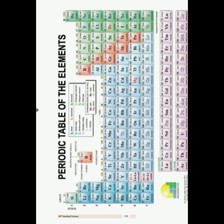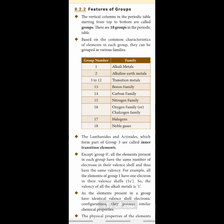Now I am going to explain about groups. Horizontal rows are called periods — there are seven periods. Groups are the vertical columns counted from top to bottom. There are 18 groups in the periodic table.